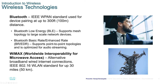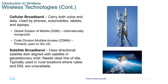Next, cellular broadband can carry both voice and data and is used by phones, automobiles, tablets and laptops. The Global System of Mobile, also known as GSM, is an internationally recognized system. Code Division Multiple Access, also known as CDMA, is mostly used in the US but also in some parts of Asia. Satellite broadband uses a directional satellite dish aligned with satellites in geostationary orbit.